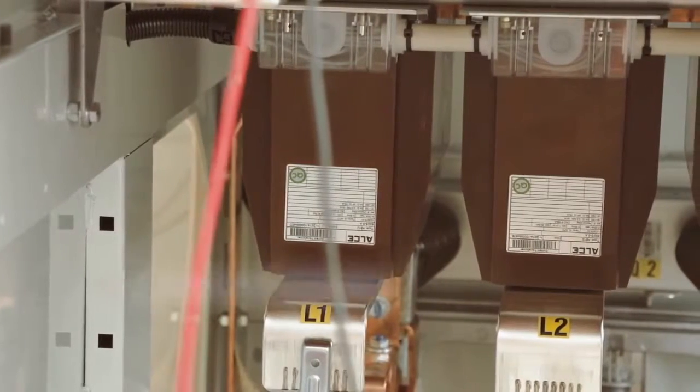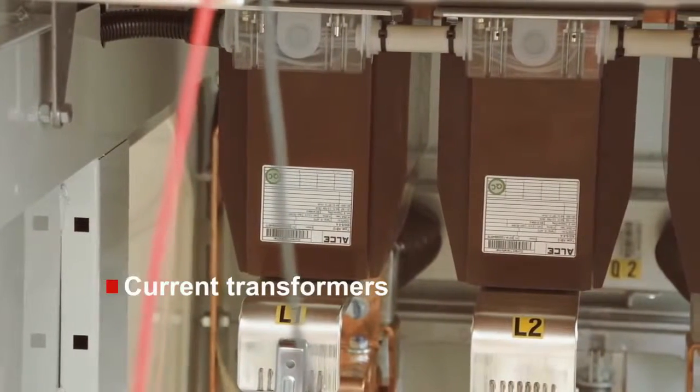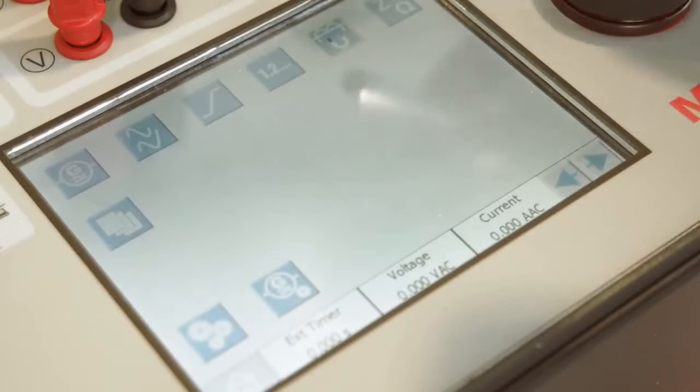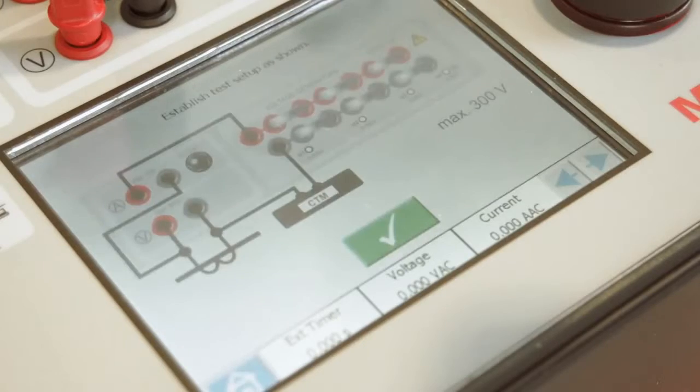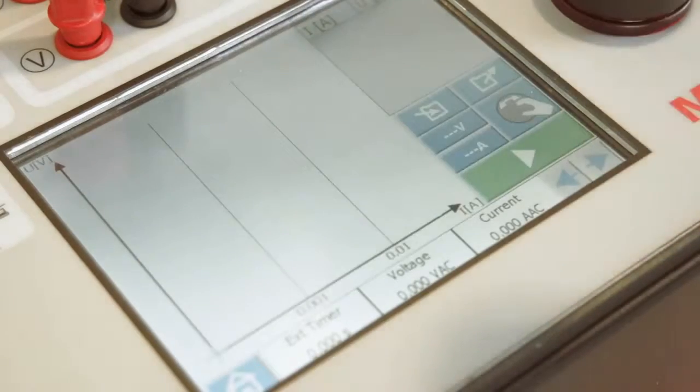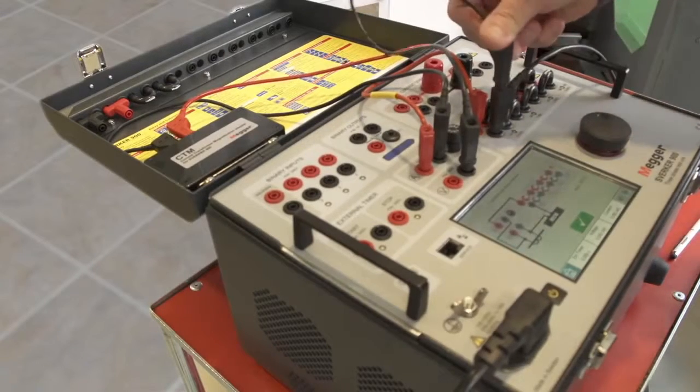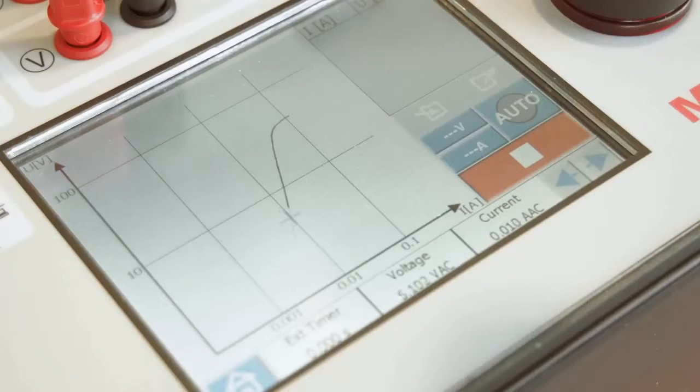One of the most common tests of current transformers is the determination of the knee point value. This can be easily done with the built-in instruments of the Sverker 900. The user is guided as to how to connect and can perform the test in a fully automatic mode as well as under manual control.